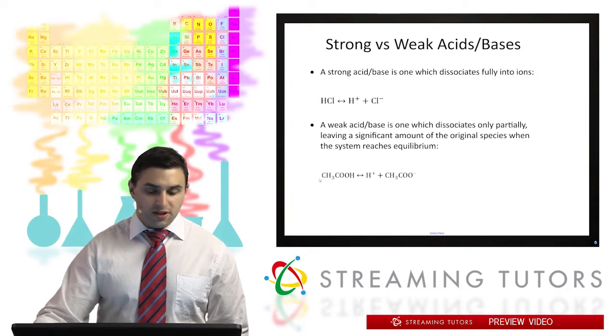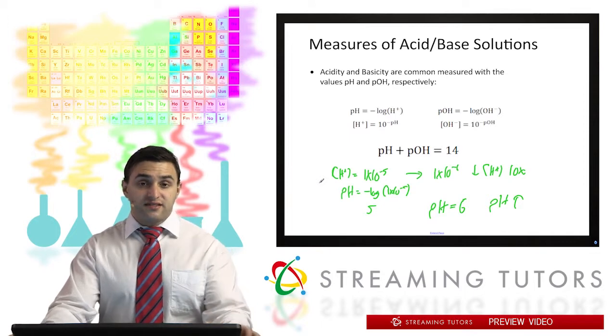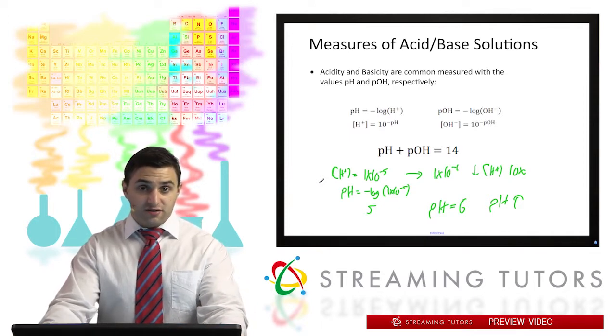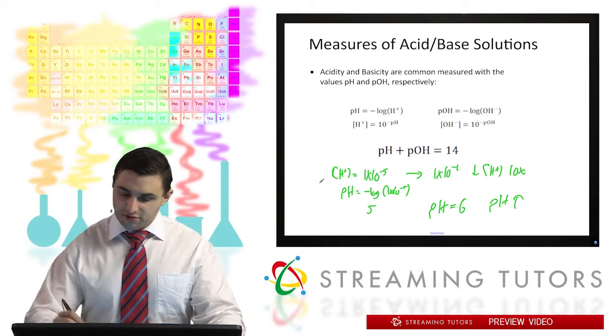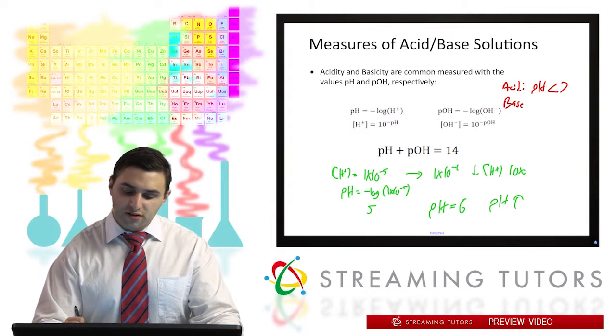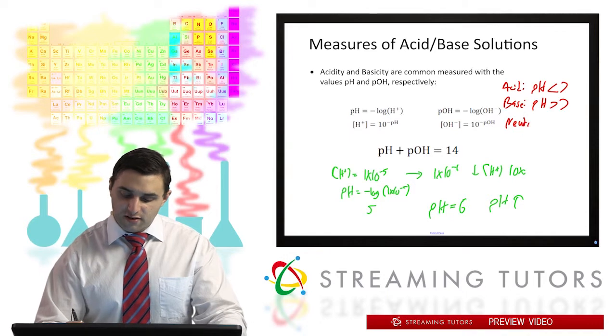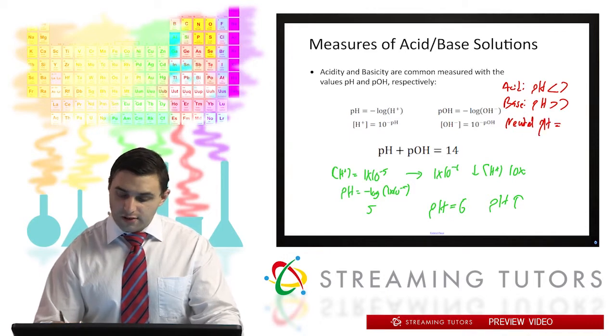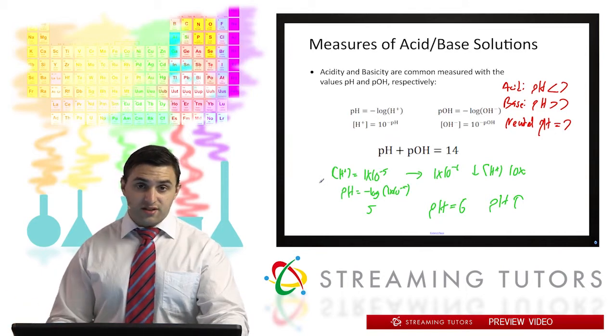So pH and pOH are the generally most common ways we're going to look at acid or base strength. One other thing I should note about pH is that the same way we said that an acid solution has H+ concentration greater than 10 to the negative 7, that's also going to translate into pH. In general, an acid solution is going to have a pH of less than 7, a basic solution is going to have a pH greater than 7, and a neutral solution would be pH equal to 7, because the negative log of 1 times 10 to the negative 7 is 7.